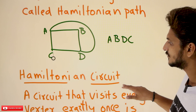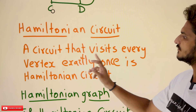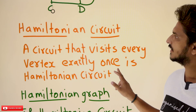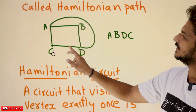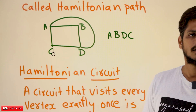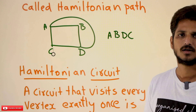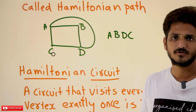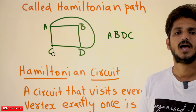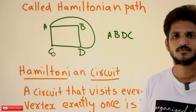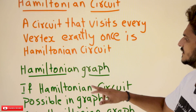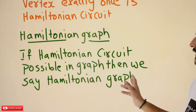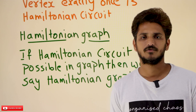Similarly, a Hamiltonian circuit means a circuit that visits every vertex exactly once. So A, B, D, C, A — that is a Hamiltonian circuit. If a Hamiltonian circuit exists for a graph, then we say it is a Hamiltonian graph. Our next definition is Hamiltonian graph: if a Hamiltonian circuit is possible in a graph, then we say it is a Hamiltonian graph.